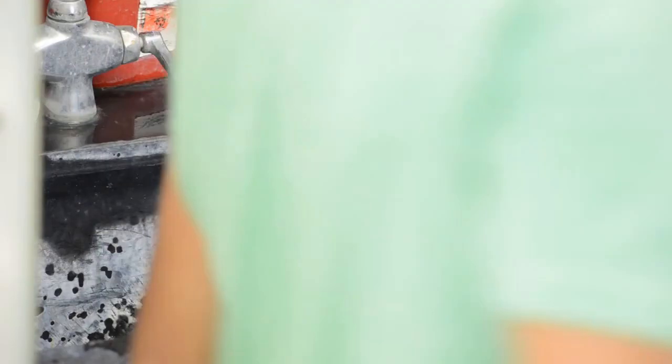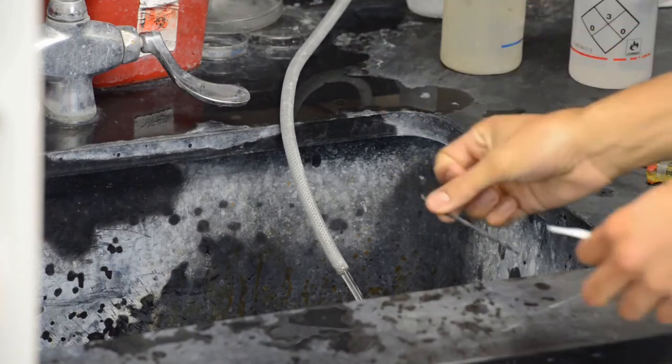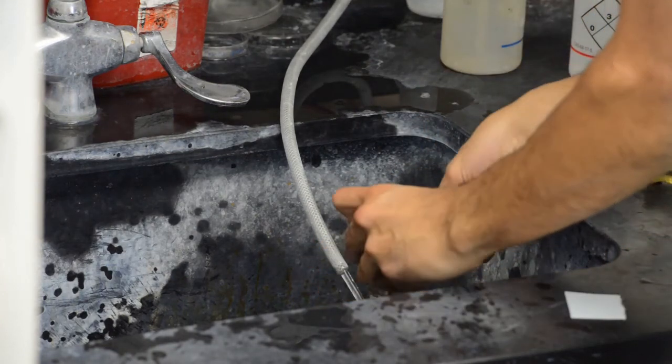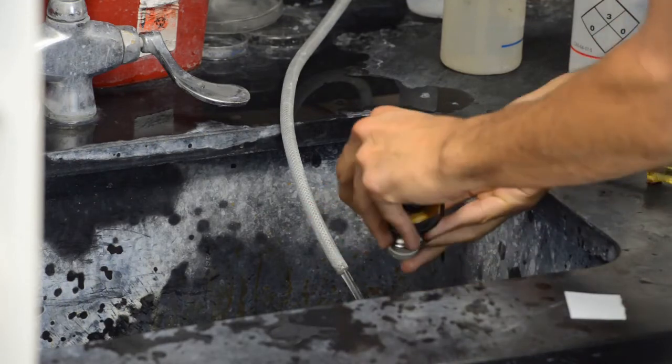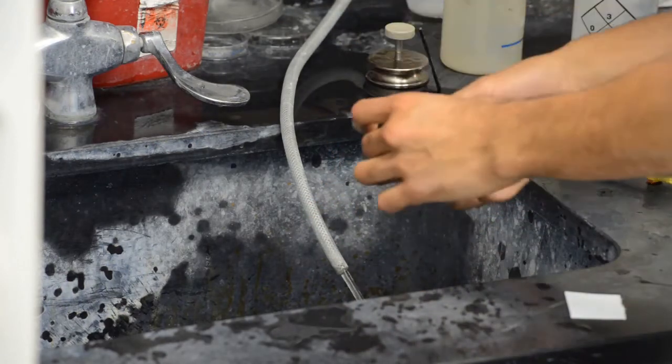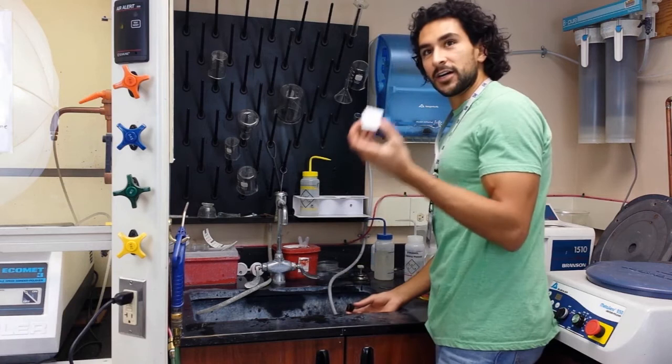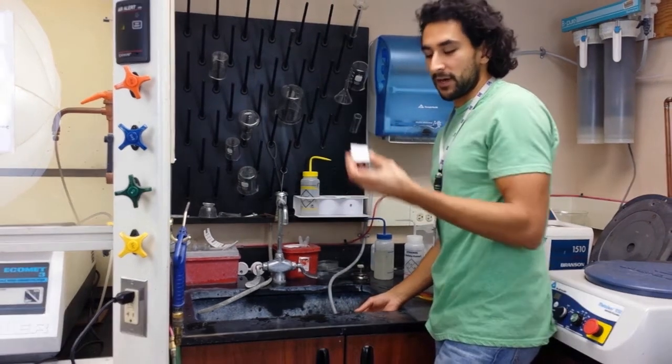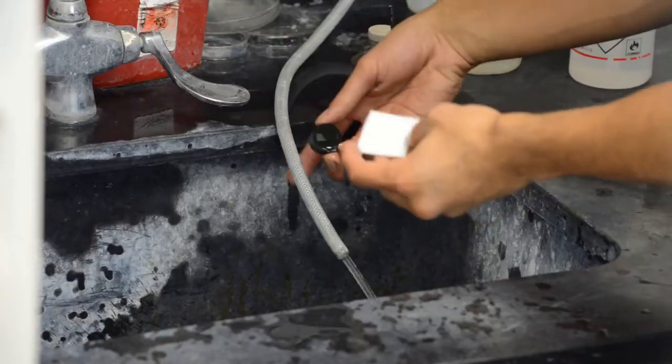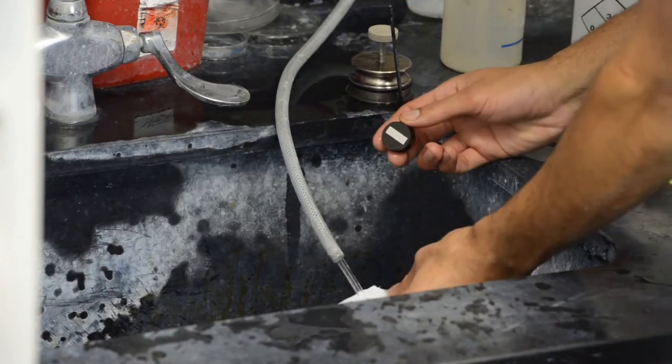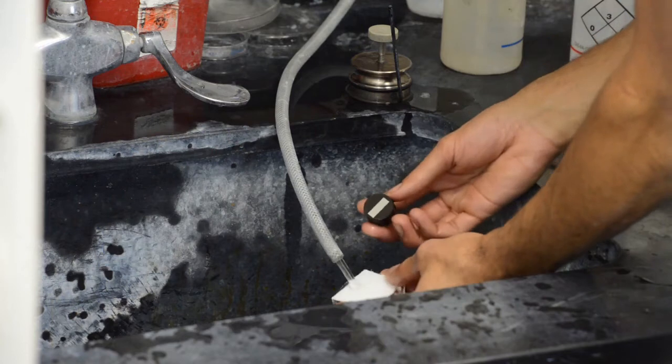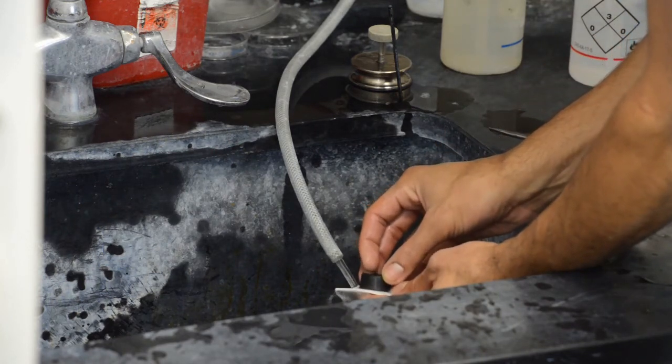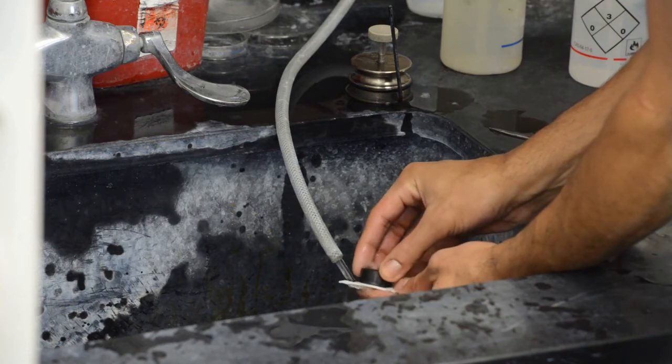And what you need is, well first, the Allen wrench to get out of it, out of there, and you need a piece of a pad. The same pad that is in the Vibramet right now. I've cut it in a small square, and we usually have some, a bag full of these around. And what you do is, you take this pad, you get it wet first.